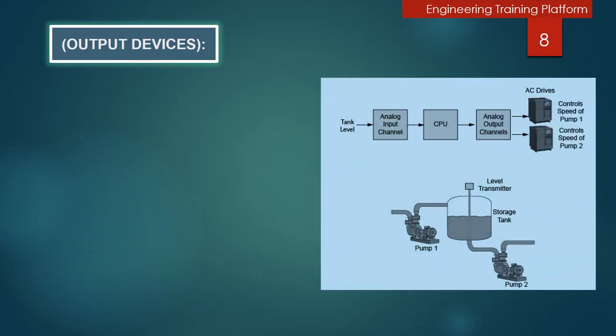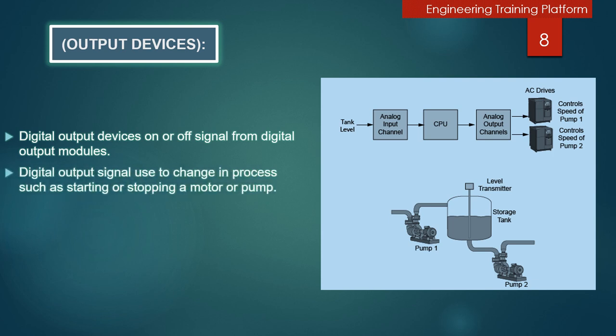Now we will discuss about output devices. You can see in the picture the complete example for the tank filling and drain. Digital output devices receive on or off signals from digital output modules. Digital output signals are used to change a process such as starting or stopping a motor or pump.